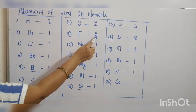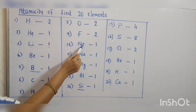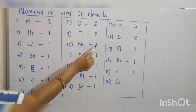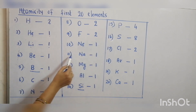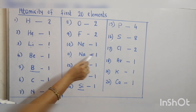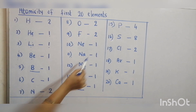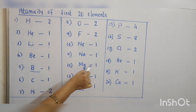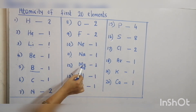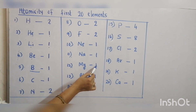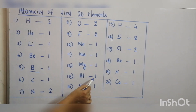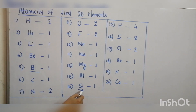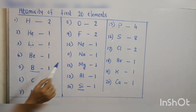Fluorine, atomicity two. Neon is an inert gas, atomicity one. Sodium is a metal, atomicity one. Magnesium is a metal, atomicity one. All metals have atomicity one. Aluminium, atomicity one. Silicon is a metalloid, atomicity one. All metalloids have atomicity one.